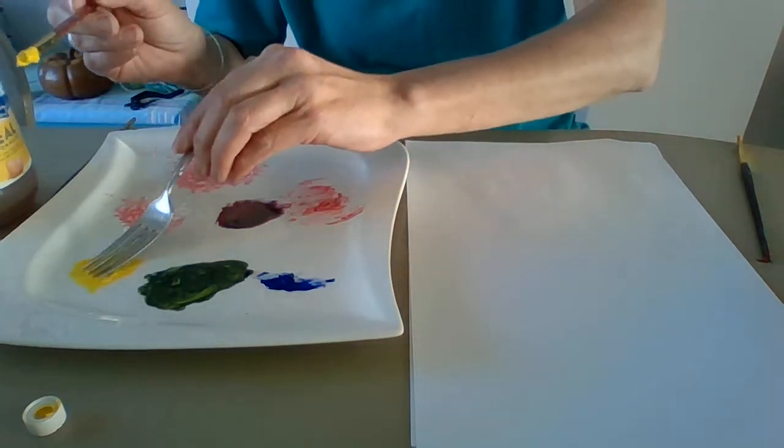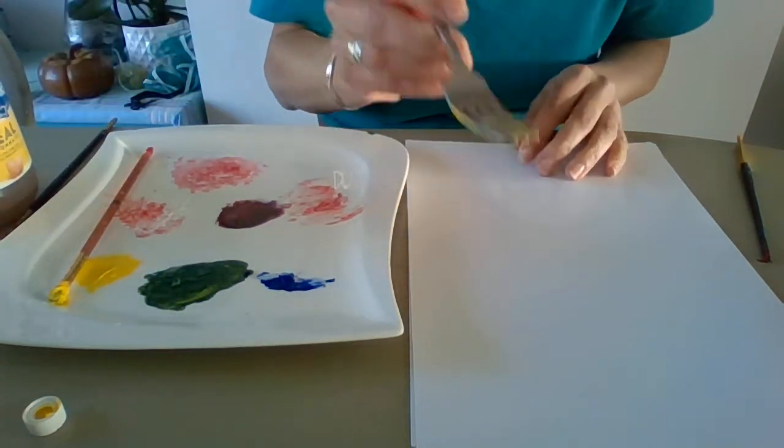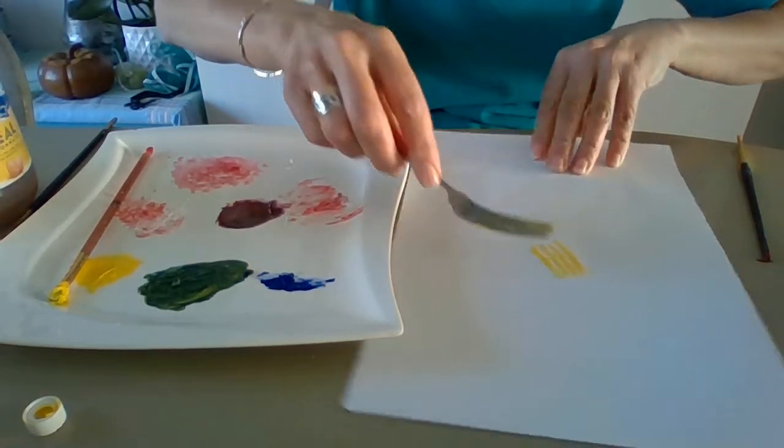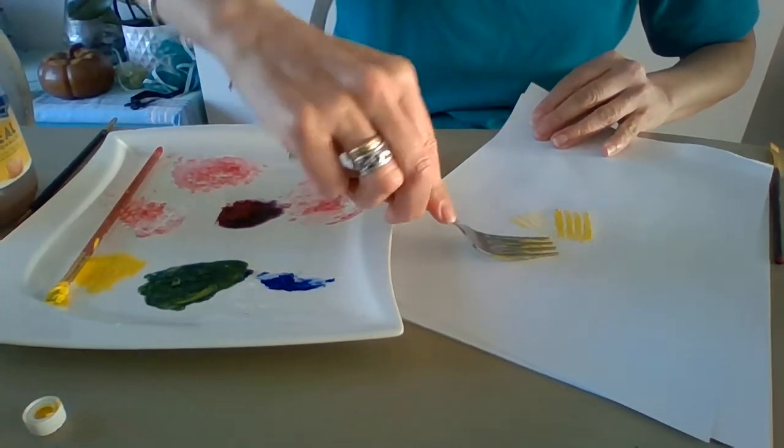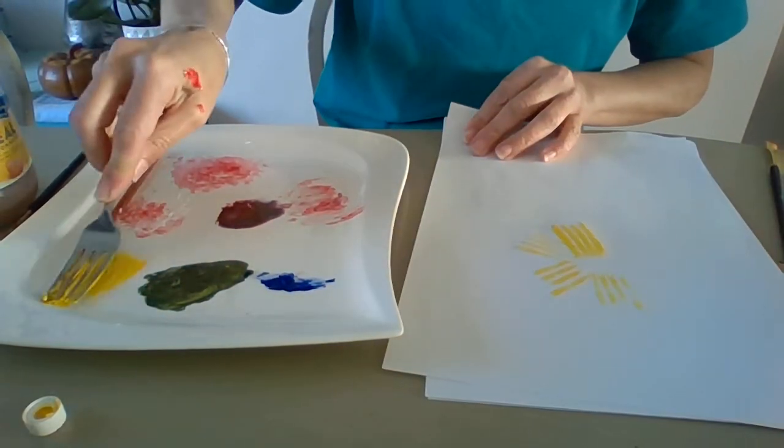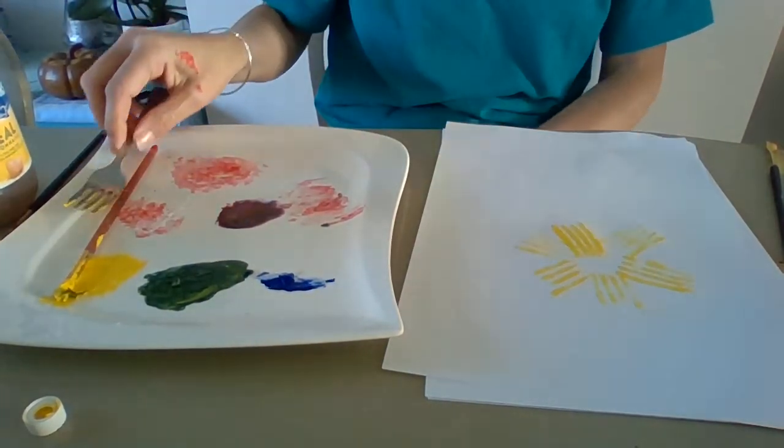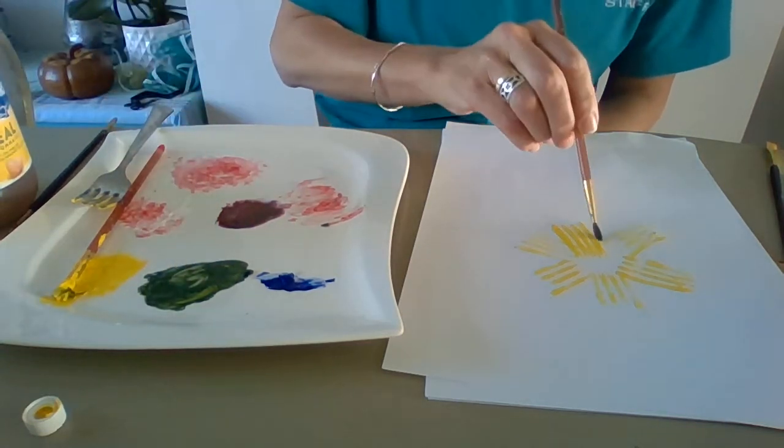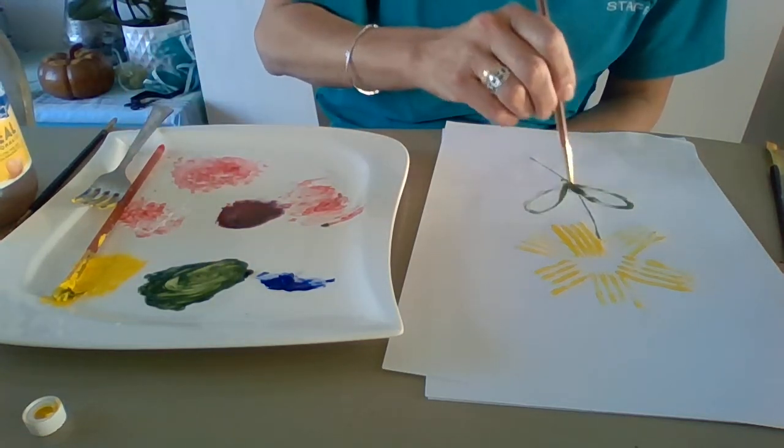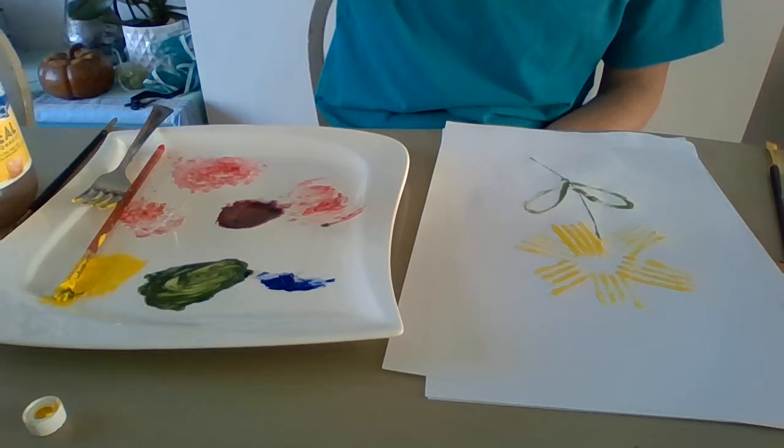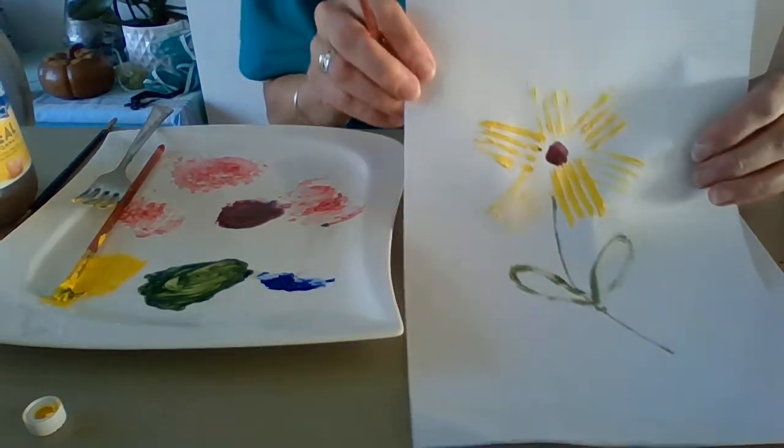I'm either going to do this with my paint or I'm going to paint the fork tips like this. And then what I can do is press the fork down on the paper. And I can either go around in a circle like this and make a daisy and then add a little bit of green to make the stem. And maybe some leaves. And I think maybe I'll use some of the purple that I made right in the middle. And there's my daisy flower.